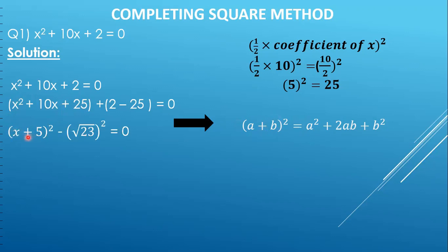You can expand this bracket to verify the answer. Next we have 2 minus 25, which gives us minus 23. Since we are writing (x+5) in terms of a square, we will write 23 in terms of a square as well. Since 23 is a prime number we cannot simplify its square root, so we write it as (√23)² because √23 × √23 gives us 23.